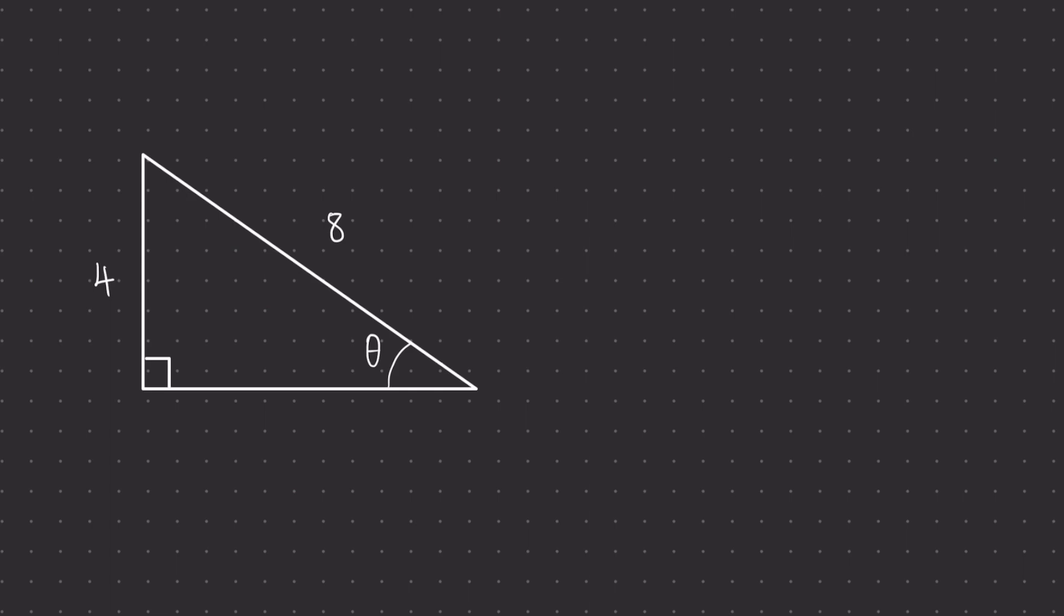In this example we can see that we're given both the hypotenuse and the opposite to this unknown angle. It's our job then to work out the value in degrees of the missing angle.